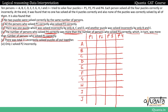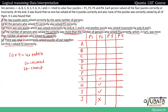The last clue tells us there were 11 incorrectly solved puzzles in total. With 10 people and 4 puzzles, there are 40 entries in the table. So 11 will be incorrect (crosses) and 29 will be correct (ticks). Also, only J solved P2 incorrectly, so J gets a cross on P2 and everyone else — A, B, C, D, E, F, G, H, I — solved P2 correctly.